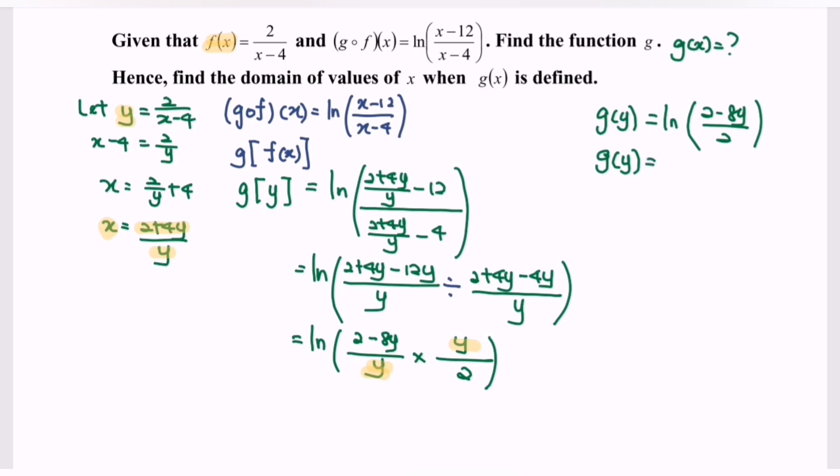g(y) equals ln of (1 minus 4y). The question is asking us to find g(x). So substitute y with x and we will have ln of (1 minus 4x). That will be the function for g(x).